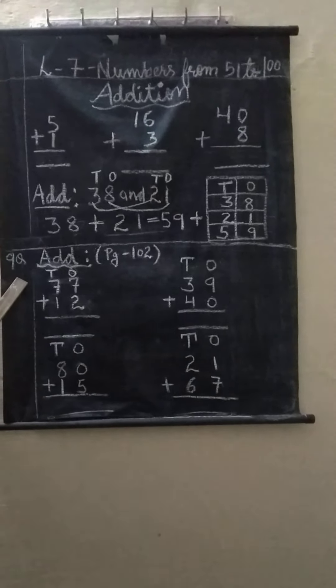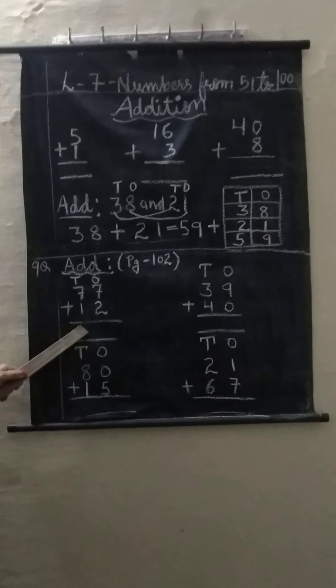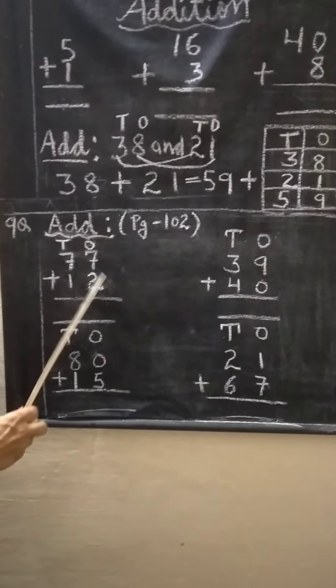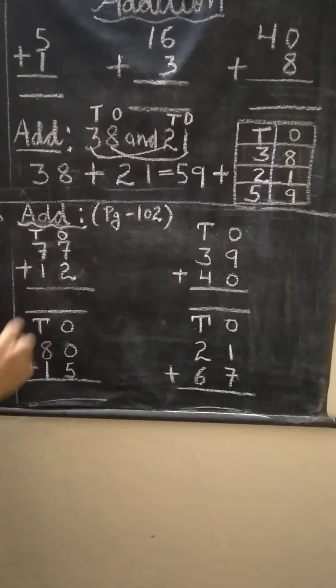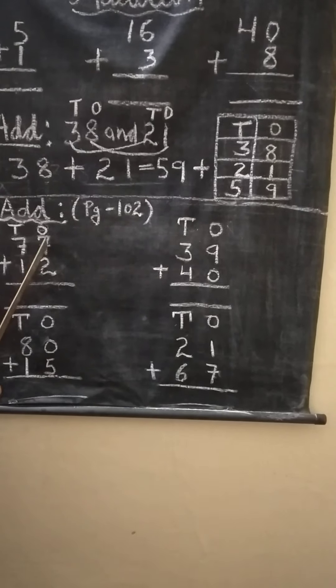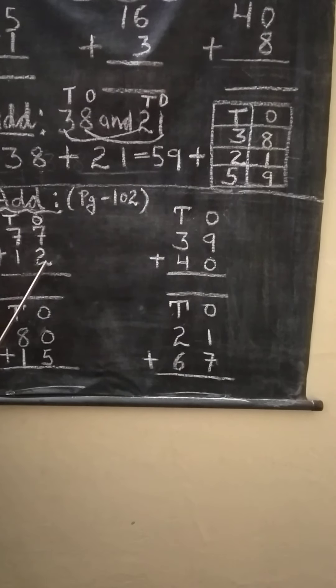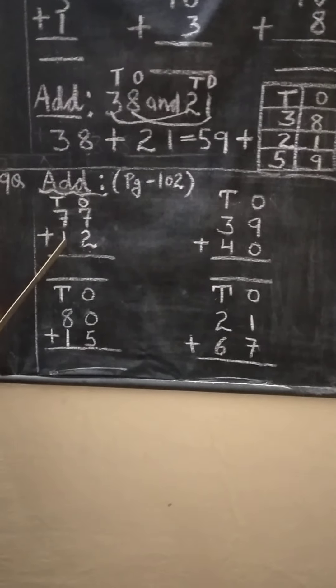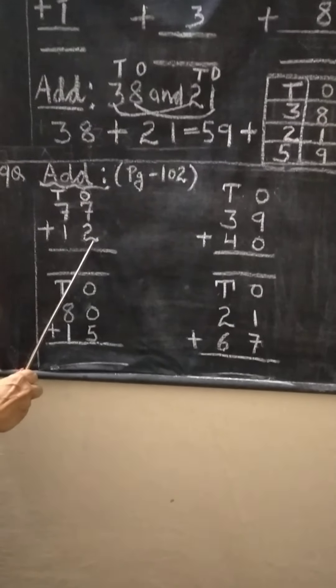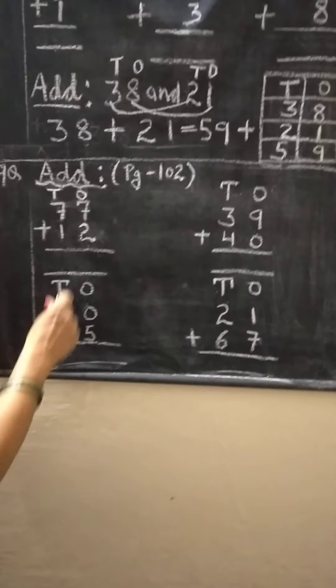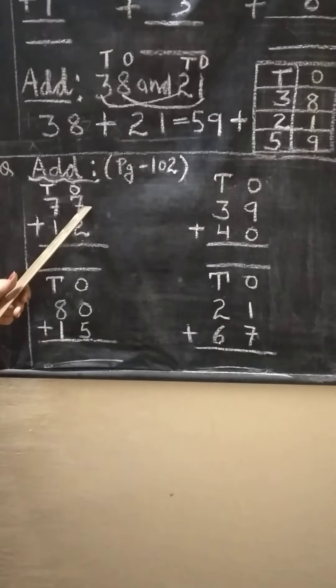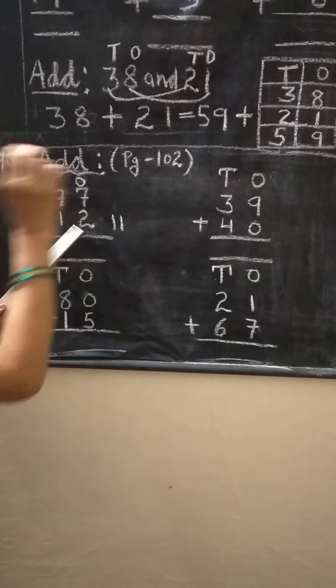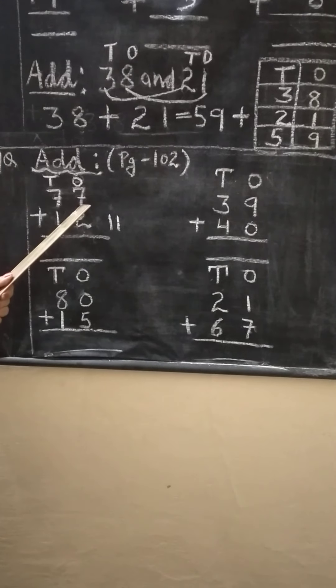Now in question number 9 you have to add these sums. You have to add ones with ones and tens with tens. We always start addition from ones place. This is 7, this is 2, so you draw the lines with the small number. 7, after 7 is 8, 9.